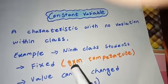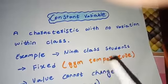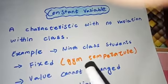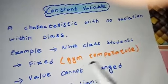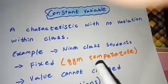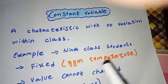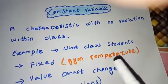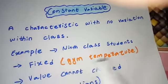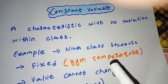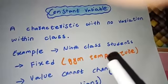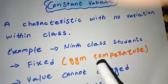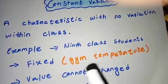A constant variable is fixed — you cannot change it arbitrarily. For example, the gym temperature is fixed for everyone inside equally. Everyone doing exercise in the gym experiences the same temperature, like 39 degrees centigrade. There is no different gym temperature for different people; there is only one temperature fixed by gym management.